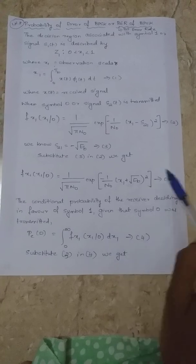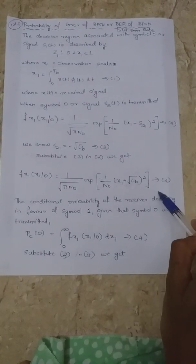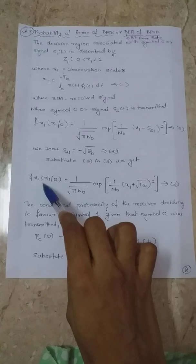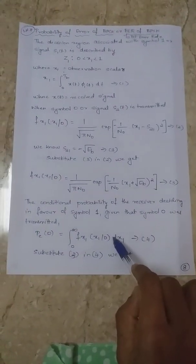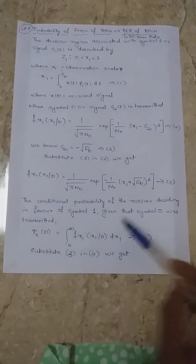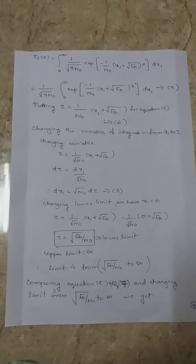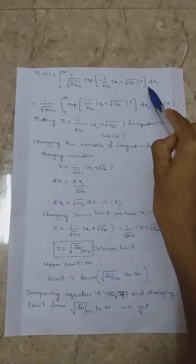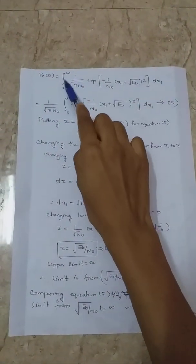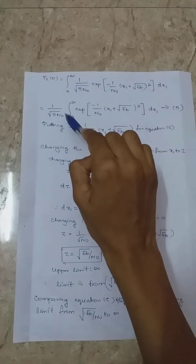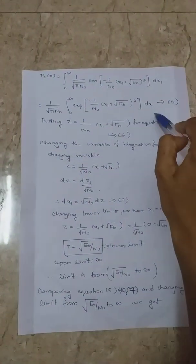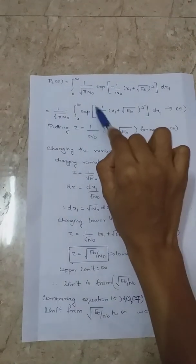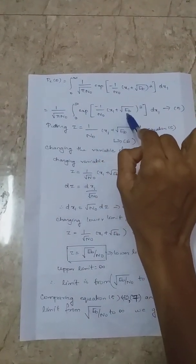Next, we take the value from equation number 3 and substitute E into equation number 4. Substituting E, we obtain the expression: minus 1 over N0 times the quantity (X1 plus root Ep) whole square.